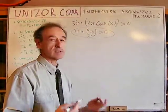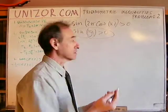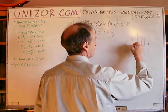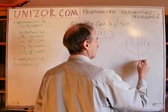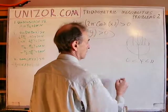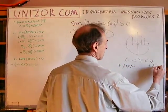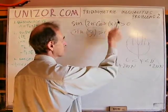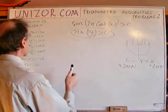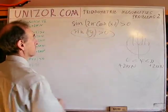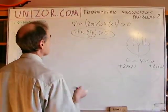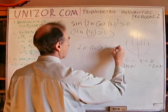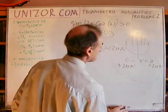We can convert the condition on a sine into a condition on the argument y — in this case, y is 2π·cosine(x). When exactly is the sine positive? Sine is the ordinate. These angles all have a positive ordinate, so it's from 0 to π plus 2πn on both sides. These are conditions for the angle sufficient for its sine to be positive. This is exactly the condition which we would like to impose on the argument to the sine.